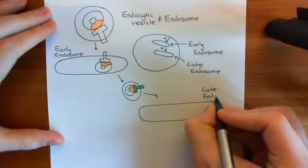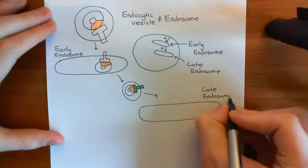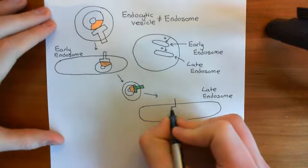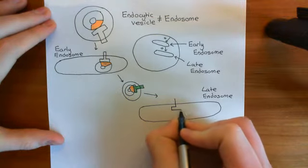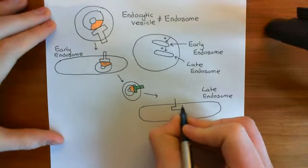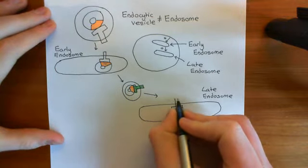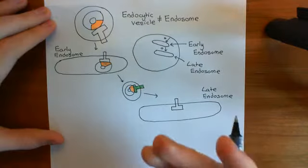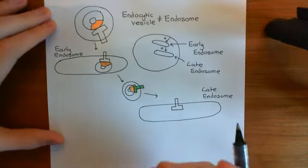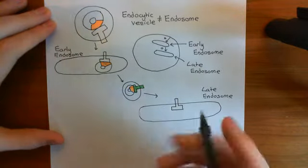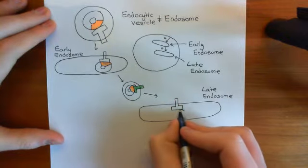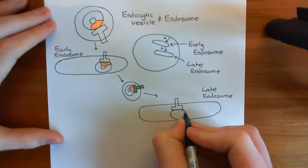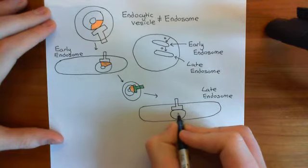Something more interesting is going to happen within the late endosome because the late endosome has an extremely low pH — it's extremely acidic in there. As you become more acidic, the pH goes down. So you've got a very high concentration of free protons within the late endosome.